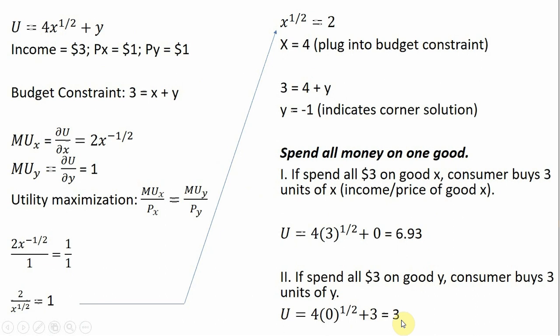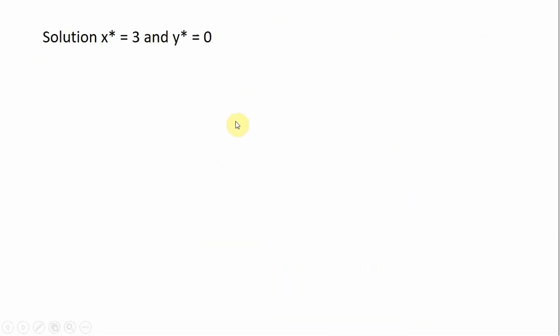So plugging in 3 units of Y into the utility function and simplifying, utility equals 3. So in this case, we get more utility if we spend all our money on good X than good Y. So that will lead to our solution where we're going to buy 3 units of good X and no units of good Y.